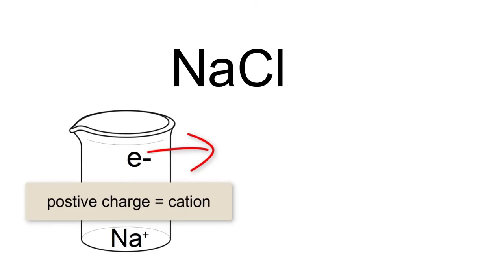The cation, whether you are writing the formula or the name, will always be written first, which means for this example would be sodium, the name of the element for the symbol Na.